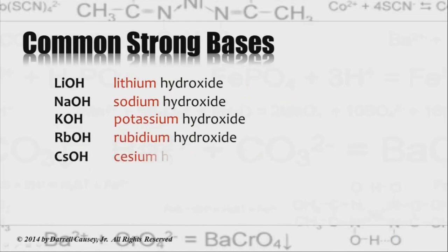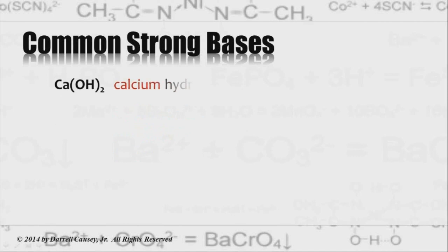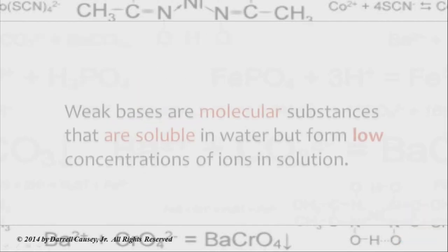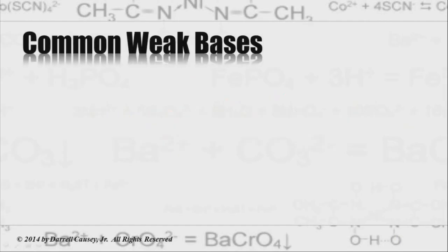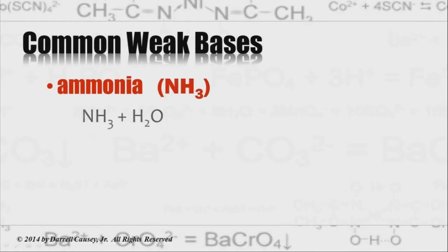Weak bases are molecular substances that are soluble in water but form low concentrations of ions in solution. Examples of weak bases would be ammonia, NH3, which becomes NH4+ and OH-, and that's ammonium hydroxide, your basic ammonia cleaner.